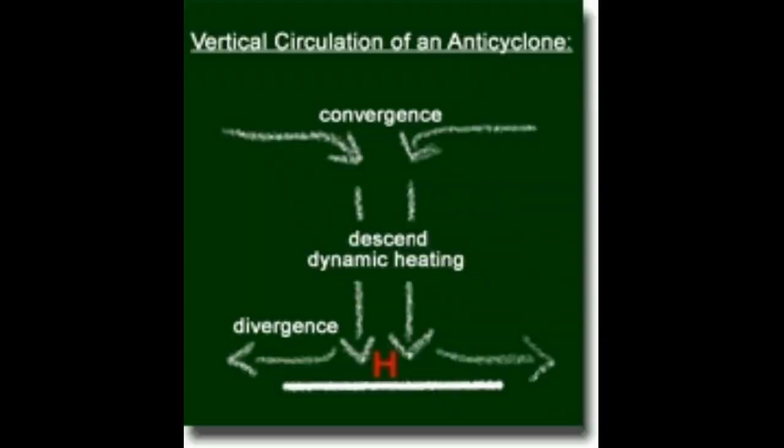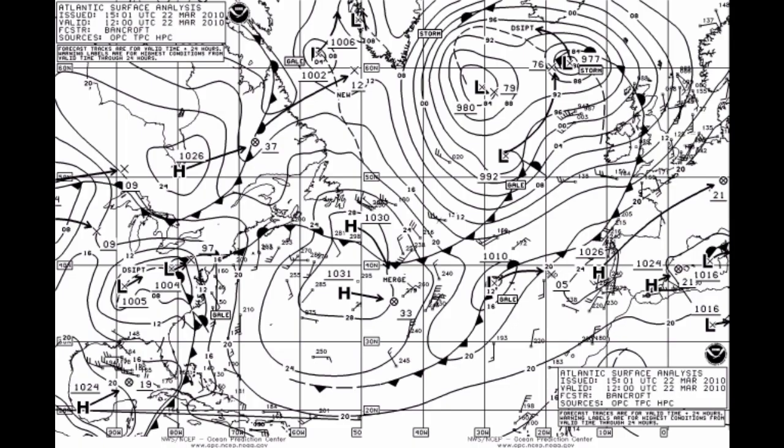The subsiding air compresses as it descends, causing adiabatic warming. The eventually warmer and drier air suppresses cloud formation, and thus anti-cyclones are usually associated with fine weather in the summer and dry, cold, and sometimes foggy weather in the winter. Anti-cyclones are typically relatively slow-moving features.